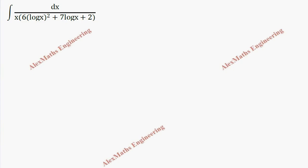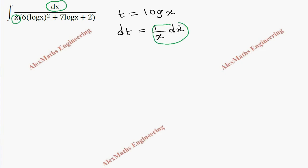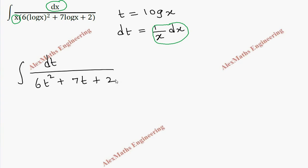Now coming to the next question, we have log. So let's take the substitution t as log x. So dt will be 1 by x dx. So we have dx by x which can be replaced by dt. So we get integral dt by 6t squared plus 7t plus 2. Now let's take the quadratic expression: 6t squared plus 7t plus 2. We are going to do completing the square. As per the procedure, we have to take the t squared coefficient common. So 6 when we take common, we get t squared plus 7 by 6 t plus 2 by 6.